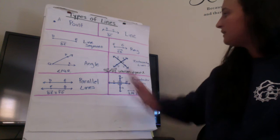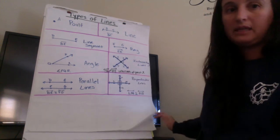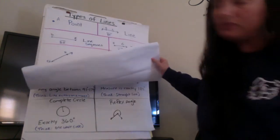So that's it for now for types of lines. The other ones we'll go over in another lesson. So let's go over the different types of angles that we learned.